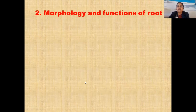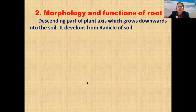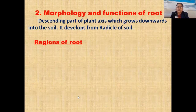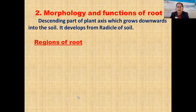Morphology and functions of root. Root is the descending part of the plant axis which grows downward into the soil. It develops from the radicle of the embryo. Root is positively geotropic, positively hydrotropic, while negatively phototropic — it grows towards gravity. Roots are non-green and do not show presence of nodes and internodes. Then we look at the regions of root.